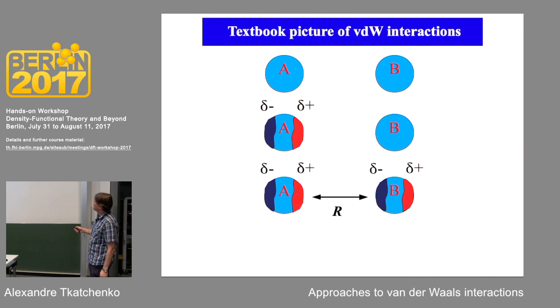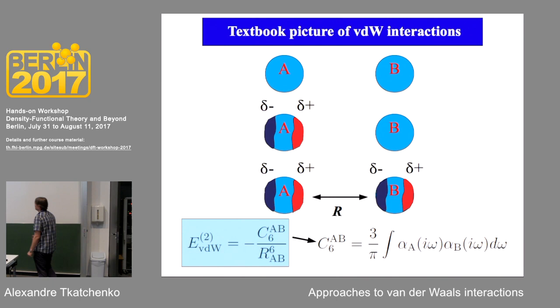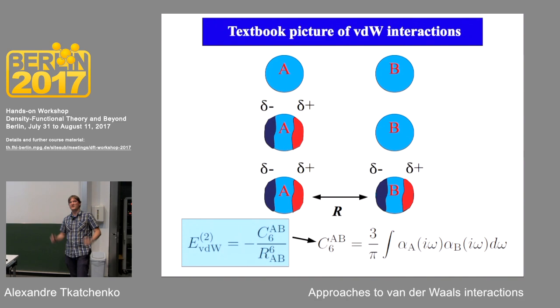Atom A has an instantaneous dipole moment, atom B has an instantaneous dipole moment, and these correlate. Because of this correlation there is an effective interaction between A and B that scales with distance R. Using second-order perturbation theory, we derive this effective interaction — now called the van der Waals interaction — as a C6 coefficient for two atoms AB divided by the distance to the power of 6. The C6 coefficient can be derived by the Casimir-Polder integral, scaling as a product of frequency-dependent polarizabilities of atoms A and B.